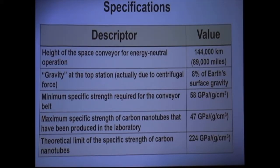In order to construct a space conveyor, the tensile strength of the conveyor belt must be sufficient to support its own weight plus the weight of any attached conveyor cars from the ground up to the height of geostationary orbit. Since the weight of the conveyor belt is proportional to its density, the relevant variable is the tensile strength divided by the density, which is known as the specific strength. The minimum specific strength required for the conveyor belt, as well as for the tether of the space elevator, is 58 gigapascals per gram per cubic centimeter. While the maximum specific strength of carbon nanotubes that have been produced in the laboratory is 47 gigapascals per gram per cubic centimeter, well short of the minimum specific strength requirement. The theoretical limit of the specific strength of carbon nanotubes is 224 gigapascals per gram per cubic centimeter.